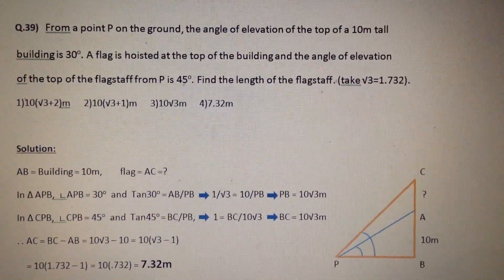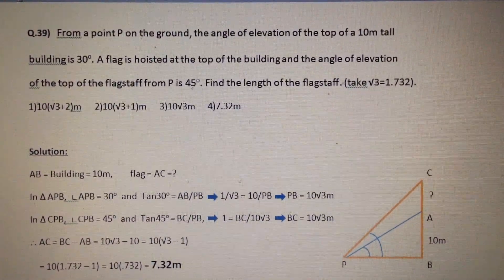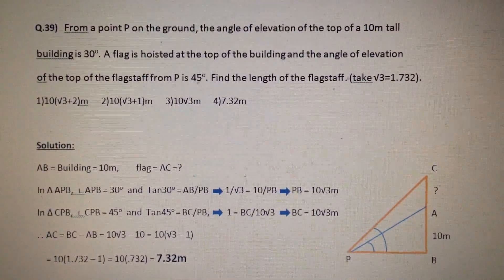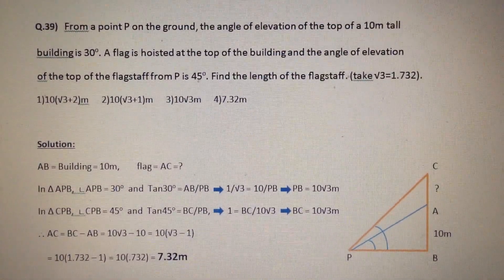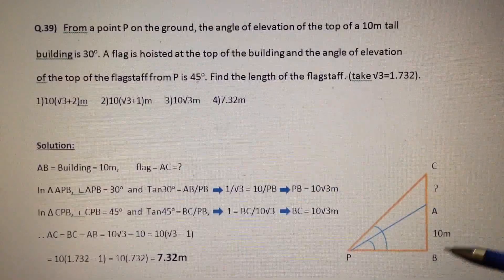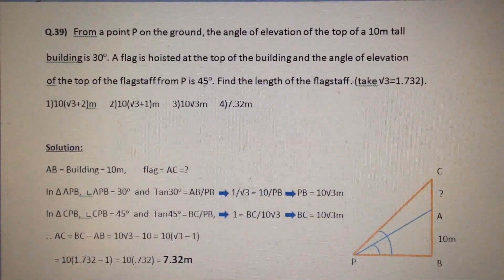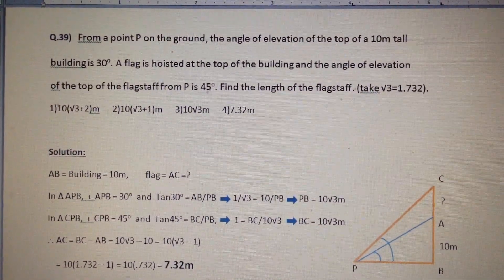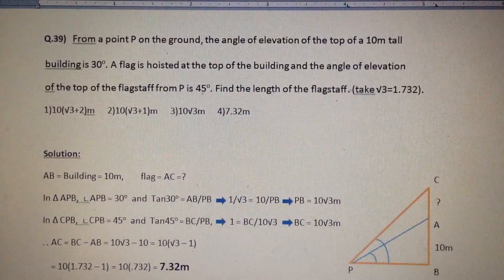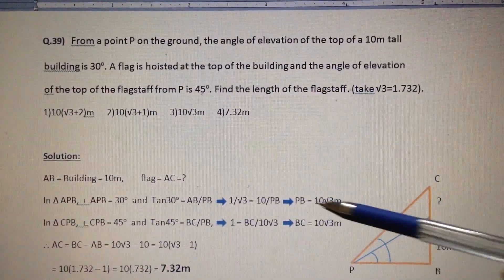Next question: from a point P on the ground, the angle of elevation of the top of a 10-meter tall building is 30 degrees. A flag is hoisted at the top of the building and the angle of elevation of the top of the flagstaff from P is 45 degrees. Find the length of the flagstaff. Let AB be the building, 10 meters long, and AC is the flagstaff. In triangle APB, the angle of elevation is 30 degrees. tan 30° = AB/PB = 1/√3 = 10/PB.